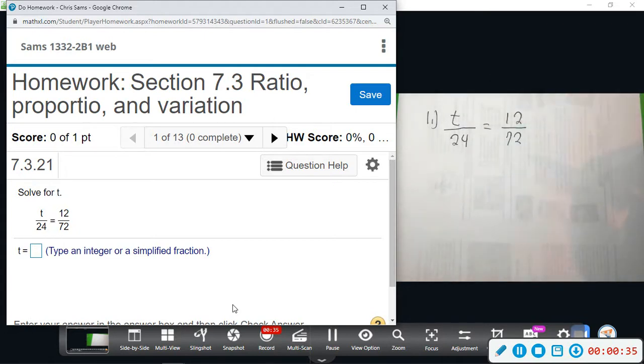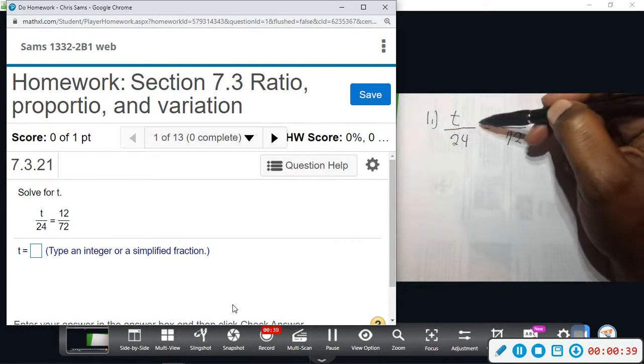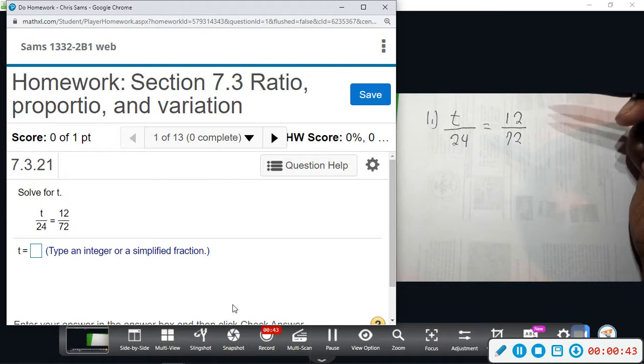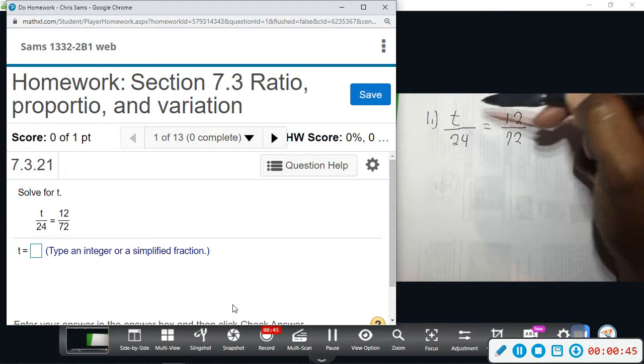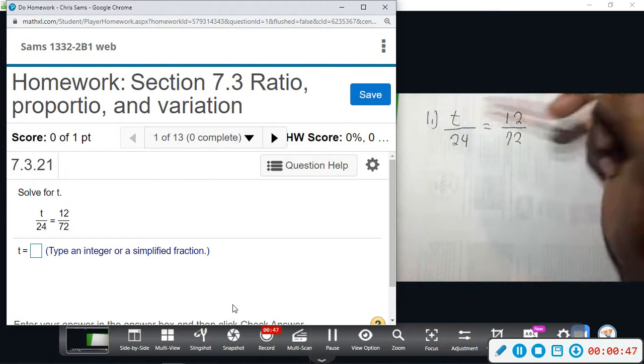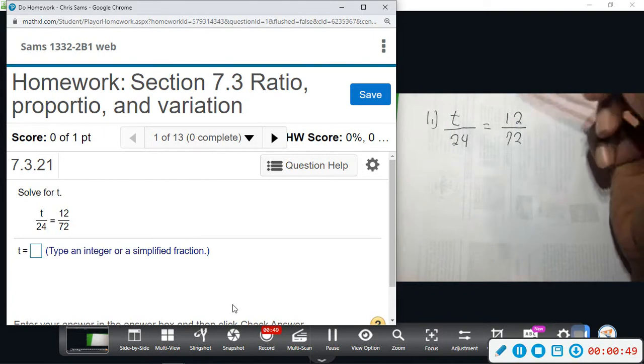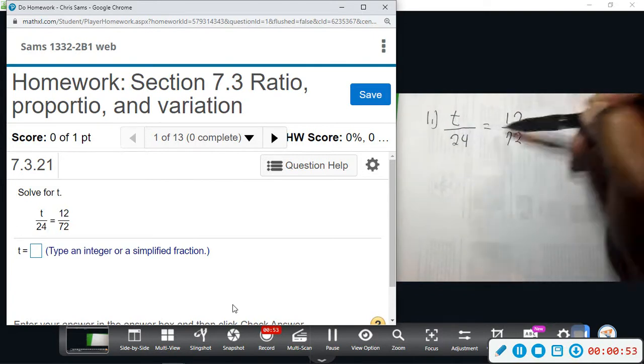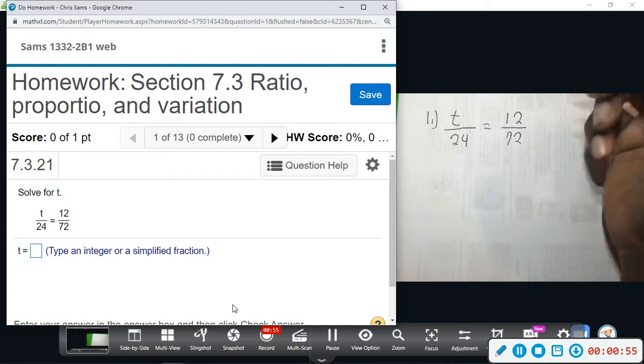Really, all you need to do to get t by itself is to multiply by 24, since it's being divided by 24. You got to make sure your variable's on the top. When it's on the top, that's all you have to do. But when it's on the bottom, which we'll probably see, then we have to multiply to bring it up, so we'll probably have to cross multiply in that instance.